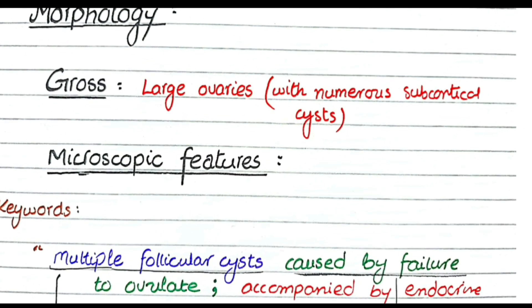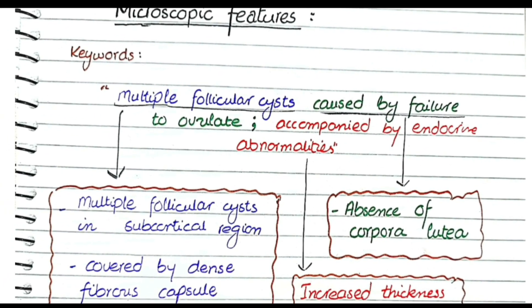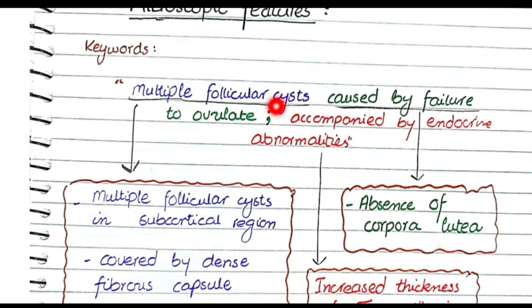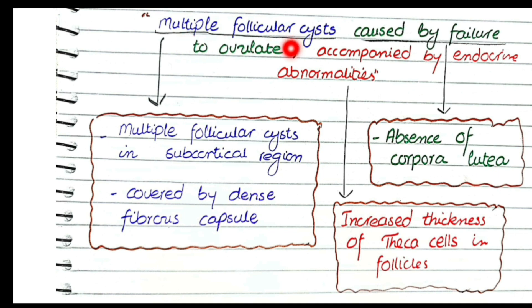Regarding morphology, the gross features are simple: you will see large ovaries with numerous subcortical cysts. For microscopic features, the keywords are: multiple follicular cysts caused by failure to ovulate, accompanied by endocrine abnormalities. This summarizes the pathophysiology — there are multiple follicular cysts caused by failure of ovulation, accompanied by endocrine abnormalities.